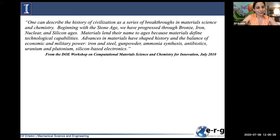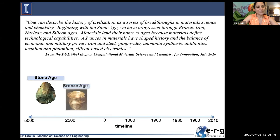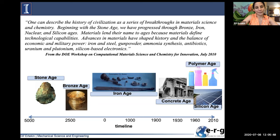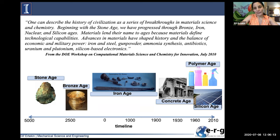I'd like to start with a quote I think is really nice. It's from a DOE workshop held about 10 years ago on computational materials science and chemistry for innovation. The report says: one can describe the history of civilization as a series of breakthroughs in materials science and chemistry. Beginning with the Stone Age, we have progressed through bronze, iron, nuclear, and silicon ages.